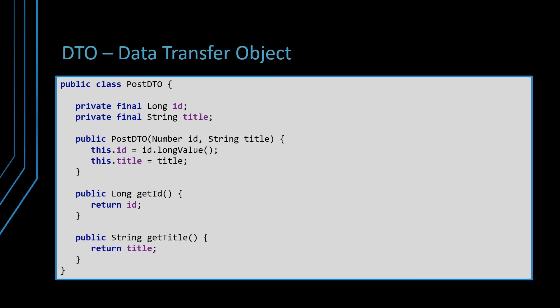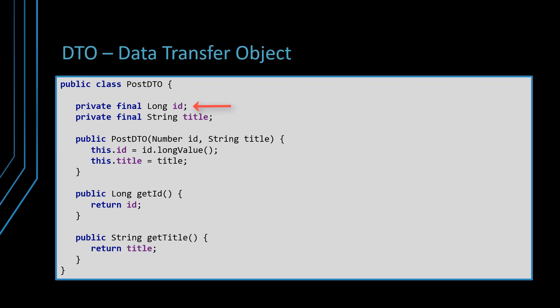The main disadvantage of the object array and tuple projections is that the returning result set values are not type safe. On the other hand, using a data transfer object or DTO is much more convenient, since each DTO property has a predefined type. Therefore, we can map our SQL projection that consists of the ID and title columns to the following postDTO object. The title column type is varchar, so the title property in the postDTO class is of the String type.